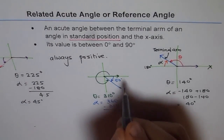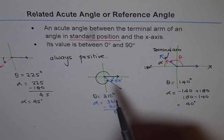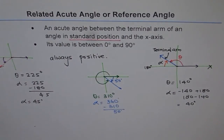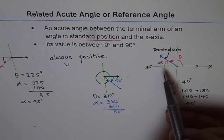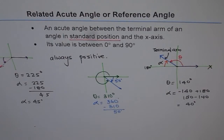So that is the related acute angle. Whether it is counterclockwise or clockwise, it does not really matter. The related acute angle is always positive and it is acute, meaning it is between 0 and 90 degrees. That is how we define our related acute angle — it is not more than 90 degrees and it is always positive.